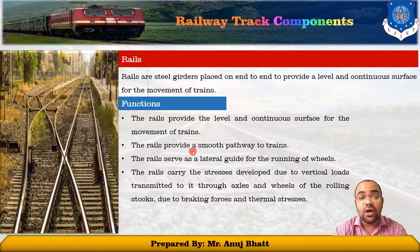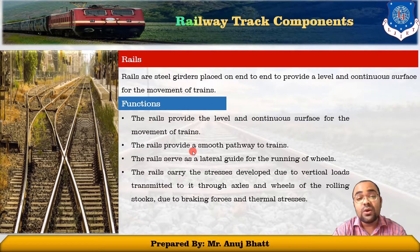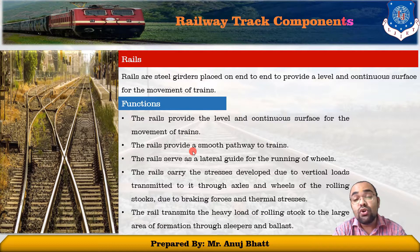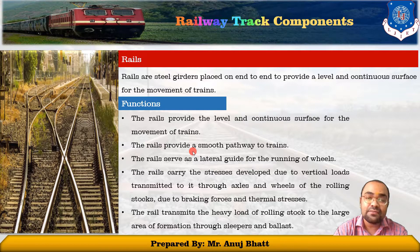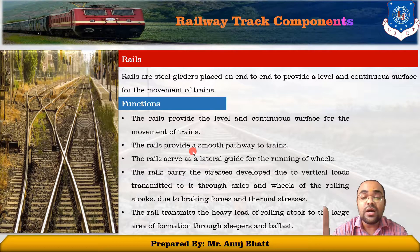Those loads are transmitted to the rails through the axle and the wheels of rolling stock — especially when braking force is applied on the train, giving stress to the rails. That load is vertically transmitted to the ballast. This may also happen because of thermal expansion and contraction, which is called thermal stresses. The rails also transmit the heavy load of rolling stock to the large area of formation through the sleepers and ballast.